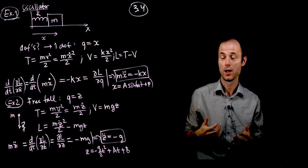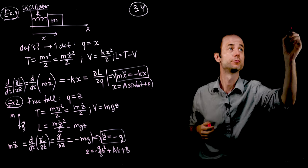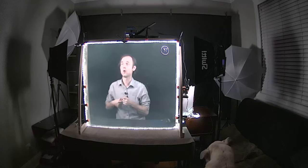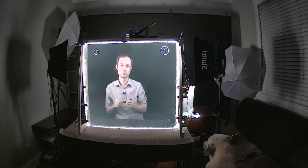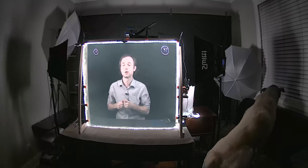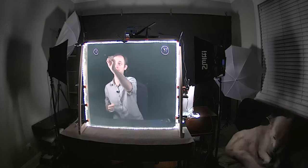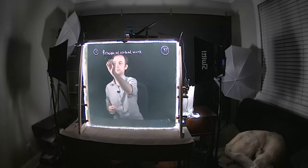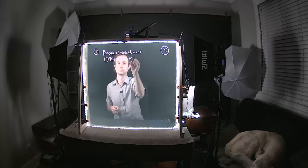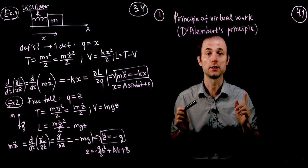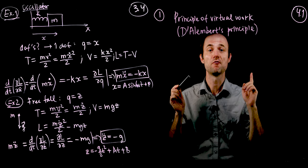Hi, everyone. Welcome to Classical Mechanics, Lecture 4. This is Part 1 of Lecture 4. Today we will start with a recap of the previous lecture, where we covered the Principle of Virtual Work and D'Alembert's Principle, which states that virtual work done by forces of constraint vanishes.